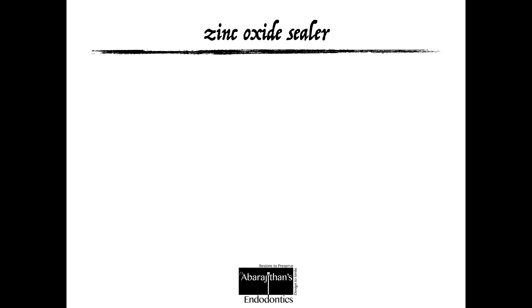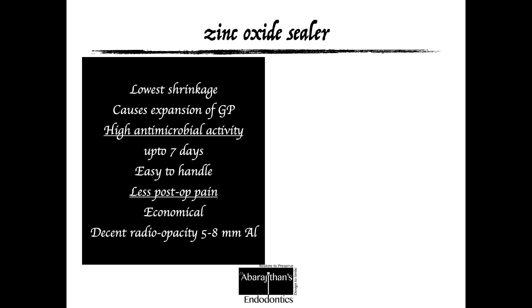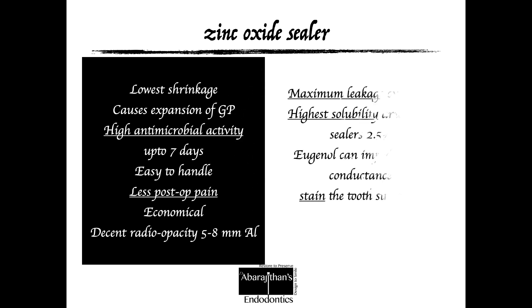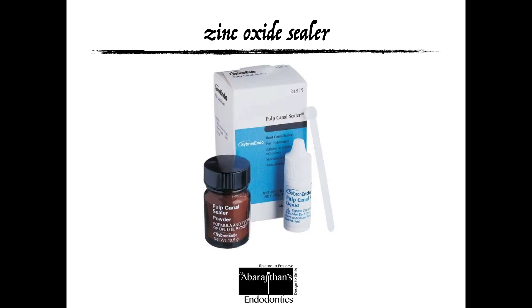The first classification is the zinc oxide eugenol-based sealers, which were among the most popular in the past and predominantly recommended with thermoplastic obturation. They have less post-operative pain compared to other sealers, very low shrinkage, and some antimicrobial activity for the first few hours. However, the main drawback is maximum leakage over time and very high solubility. Popular brands include Pulp Canal Sealer, Endomethasone, and Tubli-Seal.